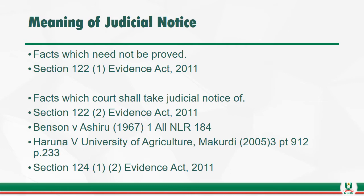For example, in the case of Benson v. Asheru, the court held that failure to plead the laws of Western Nigeria was not fatal to the case. This is because under section 73(1) — which is the equivalent of section 122(1) — the court is to take judicial notice of all laws enforced in any part of Nigeria. It is unnecessary to plead matters of which the courts take judicial notice. Even the judgment of a court shall be judicially noticed, but not when the judgment has been nullified.